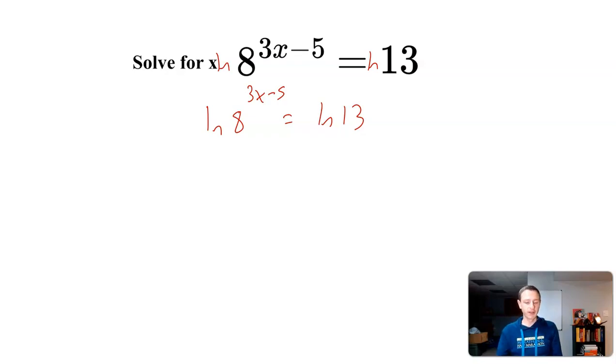Here's the reason why I did that. I can now use the power rule for natural logs. The power rule says I can take 3x minus 5 and bring it down, so this is (3x-5) times ln(8) equals ln(13). The reason I'm putting this in parentheses is a very small but important detail: I need to multiply ln(8) times 3x and ln(8) times negative 5.